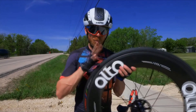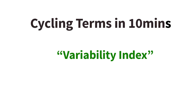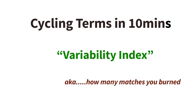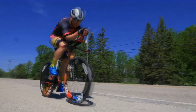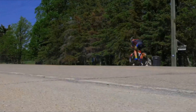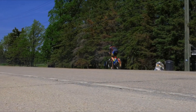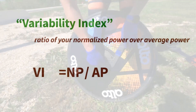What we're talking about here is the Variability Index and how it influences riders. You may or may not be aware of Variability Index. If you're not, a really simple way of thinking about it is: high Variability Index means you're burning matches during your ride — your effort is not perfectly even. In more mathematical terms, it's simply the ratio of Normalized Power to Average Power.